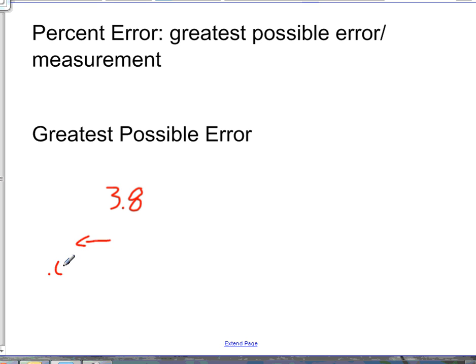Down or it could go 0.05 up. So it could be 3.75 or it could be 3.85.